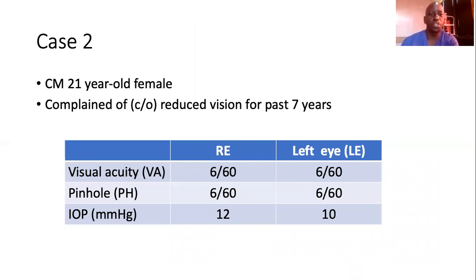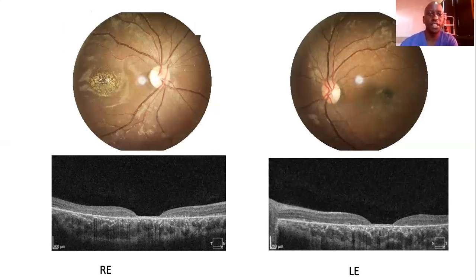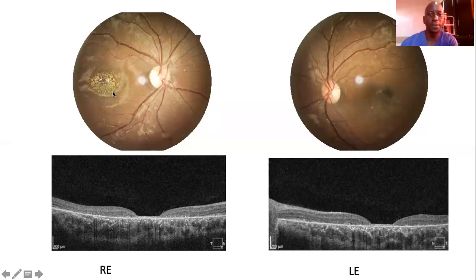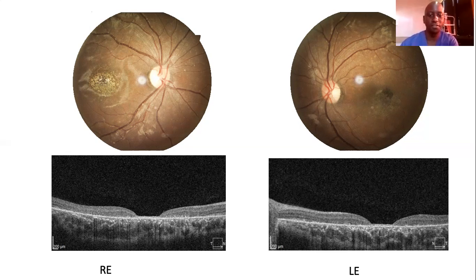The second case is CM, a 21-year-old female who complained of reduced vision for the past seven years. Her visual acuity was 6/60 in both eyes, and ocular pressure was 12 and 10. This case was slightly worse. On the fundus photo, you can see that typical beaten-bronze appearance with RPE atrophy, and a few areas of hypopigmentation in the periphery in both eyes. When you look at the macula, you see severe foveal thinning with almost all retinal layers affected — both outer and inner. It almost looks like a macular hole because of the severe foveal atrophy, with the contour of the macula totally lost.